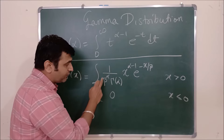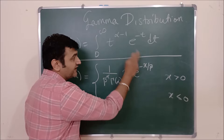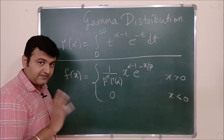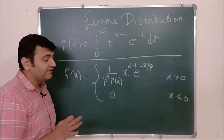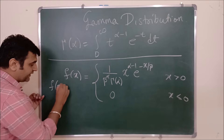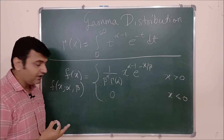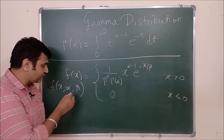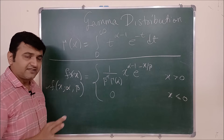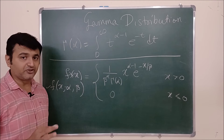If you have a function defined as: f(x) = 0 for x negative, and f(x) = (1 / β^α · Γ(α)) · x^(α−1) · e^(−x/β) for x positive, then this function is a PDF and we say that x follows a gamma distribution. We can also write this as f(x; α, β), where α and β are the two parameters.